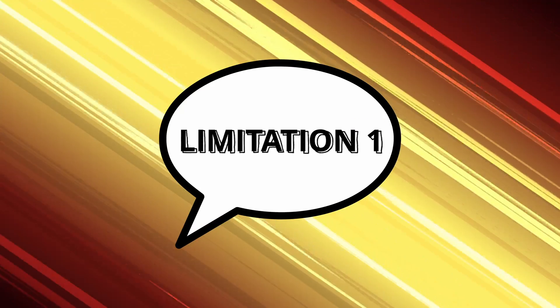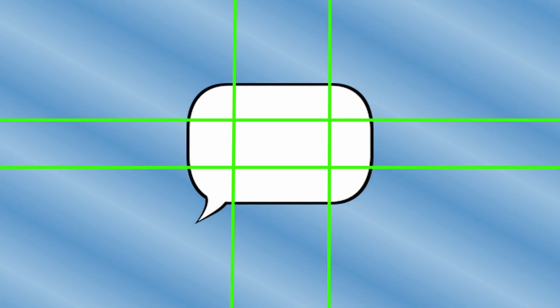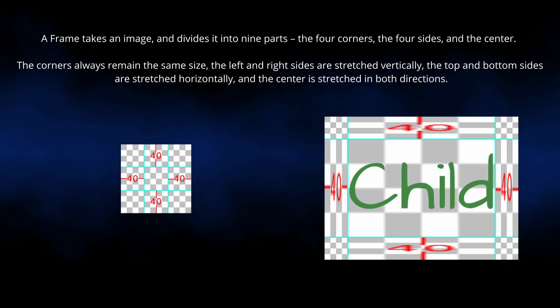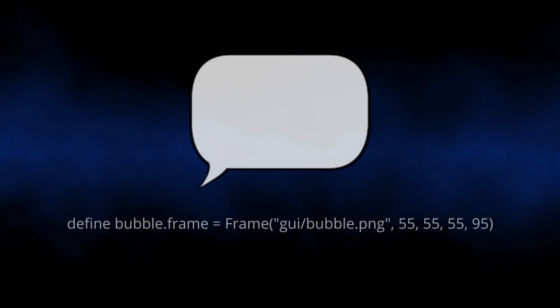First off, perfectly rounded balloons are not advisable. The default balloon is made by splitting an image into a nine-image grid — a frame takes an image and divides it into nine parts: the four corners, the four sides, and the center. The corners always remain the same size, the left and right sides are stretched vertically, the top and bottom sides are stretched horizontally, and the center is stretched in both directions. So if you use this frame method for your own word balloon, your balloon won't stay ovular — it's going to get some weird corners.